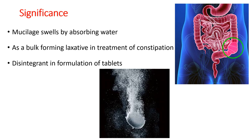Swelling index is generally done for seeds because they have the maximum amount of mucilage. In the market, various formulations contain Isapgol. The husk of Isapgol has more mucilage, so only the husk is sold. Sometimes the husk is powdered, and since it has a bland taste that cannot be tolerated by patients, this powder is mixed with flavoring agents like orange or pineapple and then sold in the market as a dry powder.